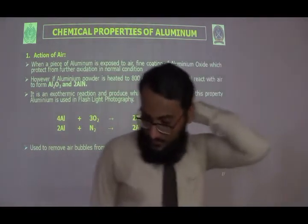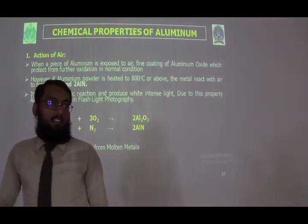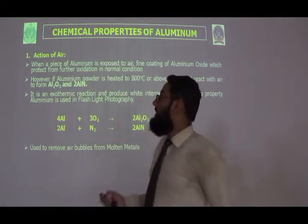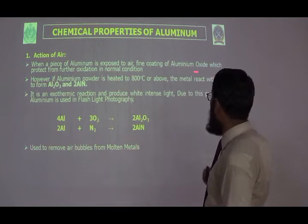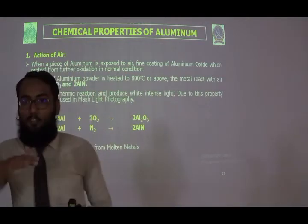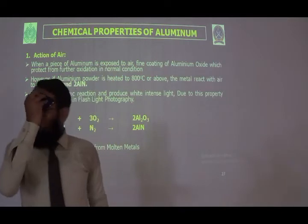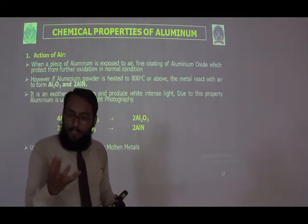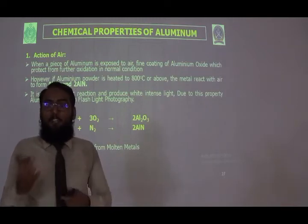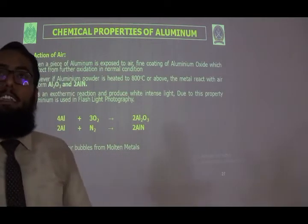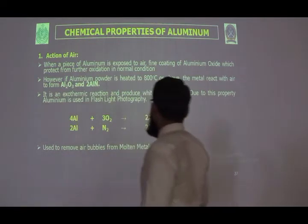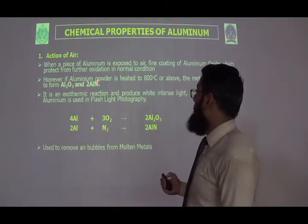Regarding chemical properties, the first is the action of air. When a piece of aluminium is exposed to air, a fine coating of aluminium oxide forms on its surface, which protects it from further oxidation under normal conditions. However, when aluminium powder is heated to 800 degrees centigrade and above, it reacts with air to form aluminium oxide and aluminium nitride.